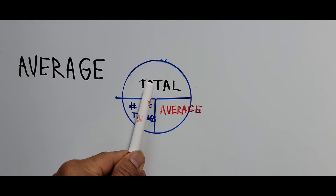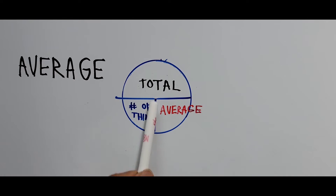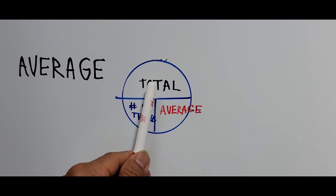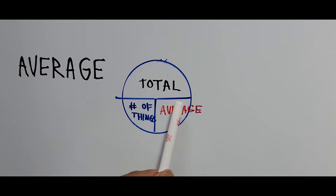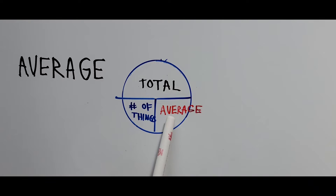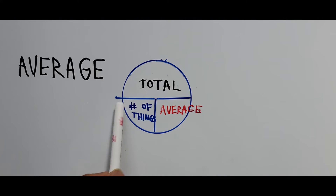To get the total, you have to multiply both the number of things and the average — that's why the vertical bar signifies multiplication. The horizontal bar indicates division, so if you want to get the average, you take the total divided by the number of things. That's how to interpret the average pie.